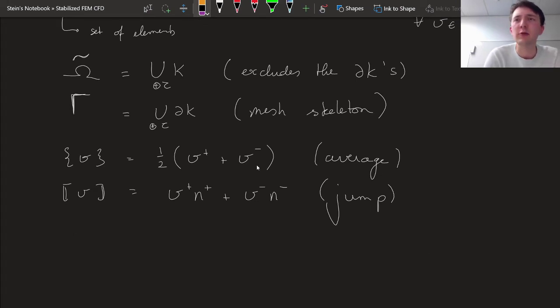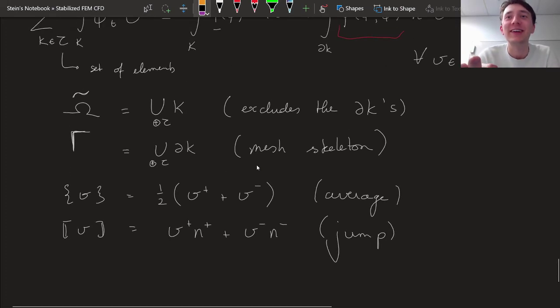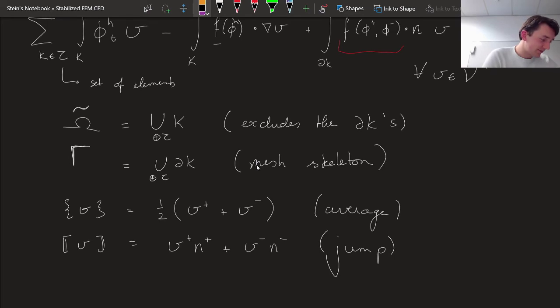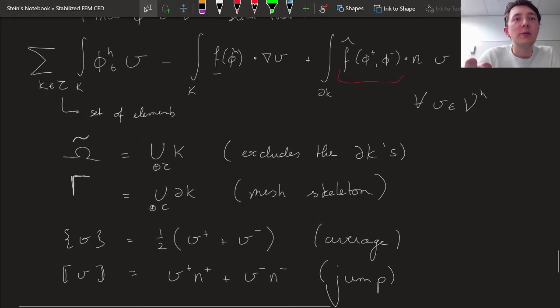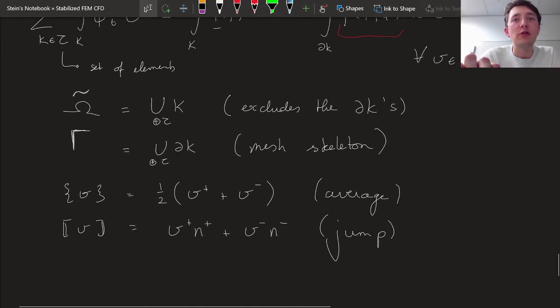I feel like I explained that more difficultly than was necessary, but I hope it's still clear. So now we have a new domain, omega tilde, that excludes the mesh skeleton, and we have our mesh skeleton, gamma, and we have these two new operators.